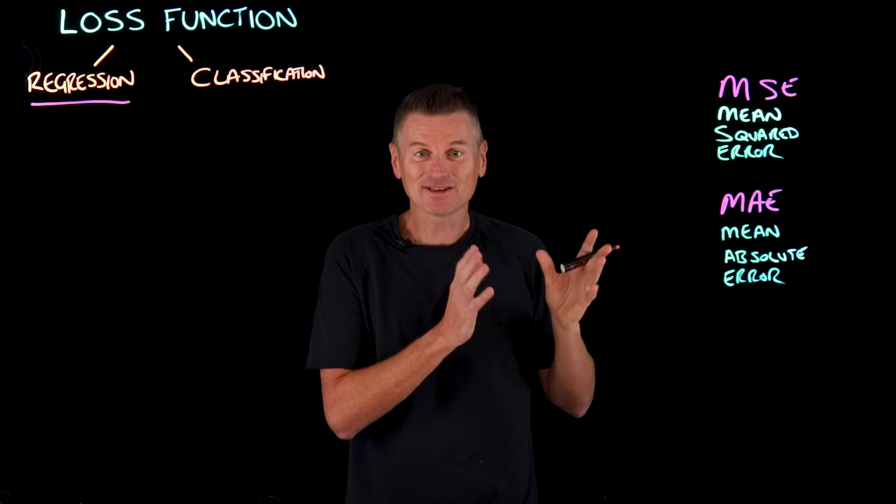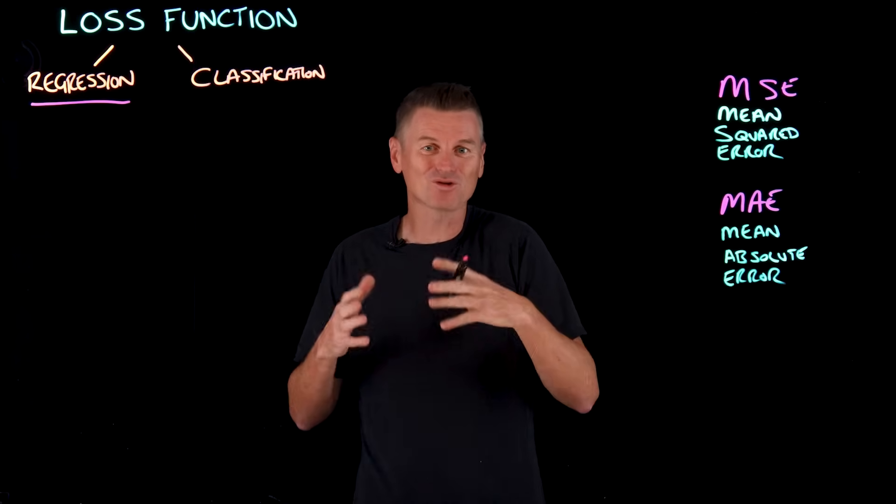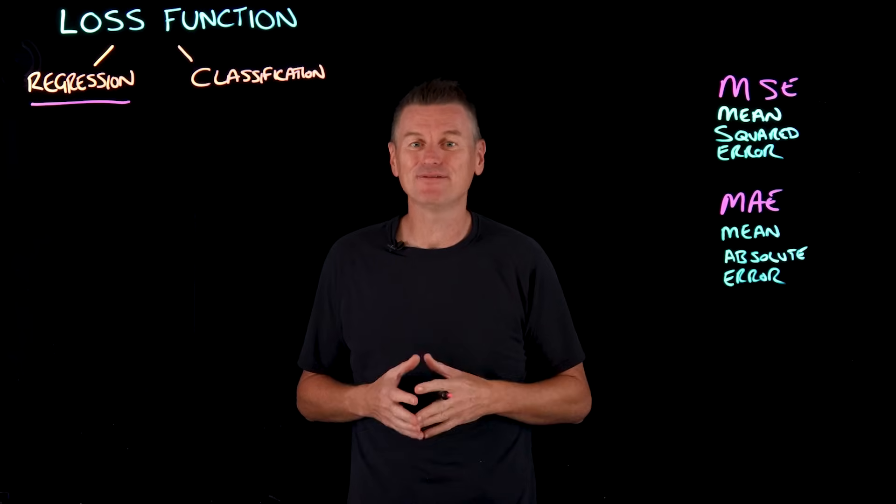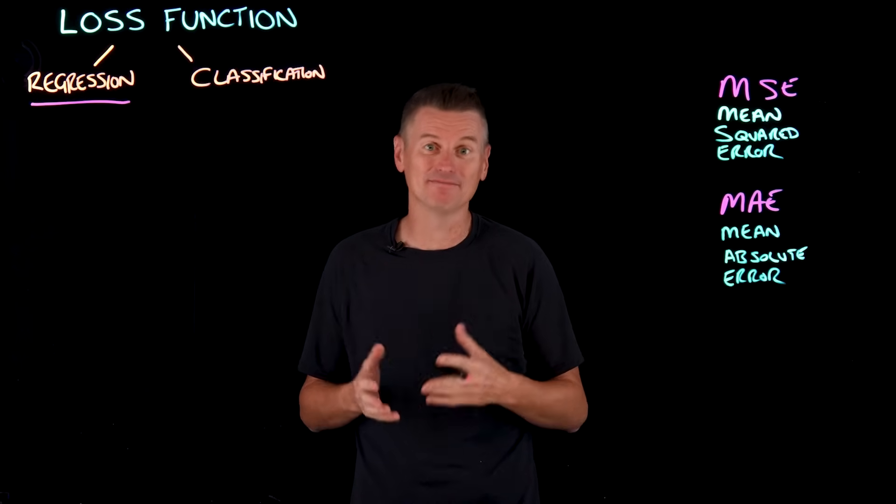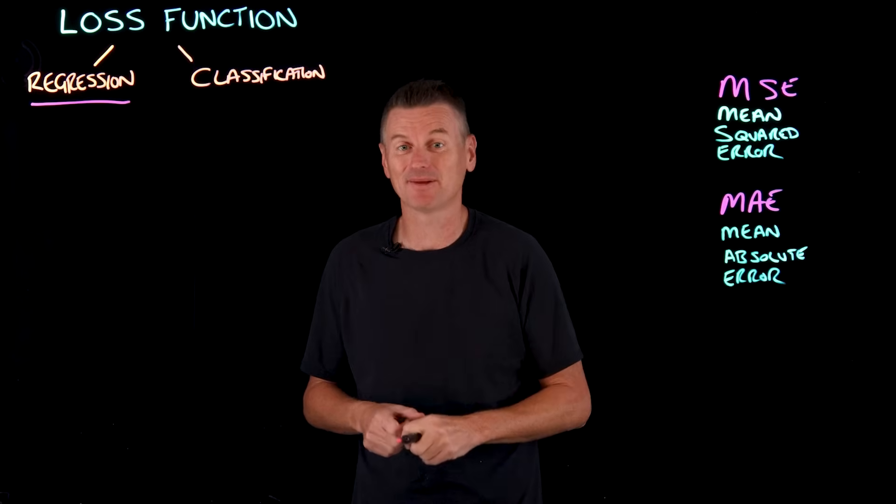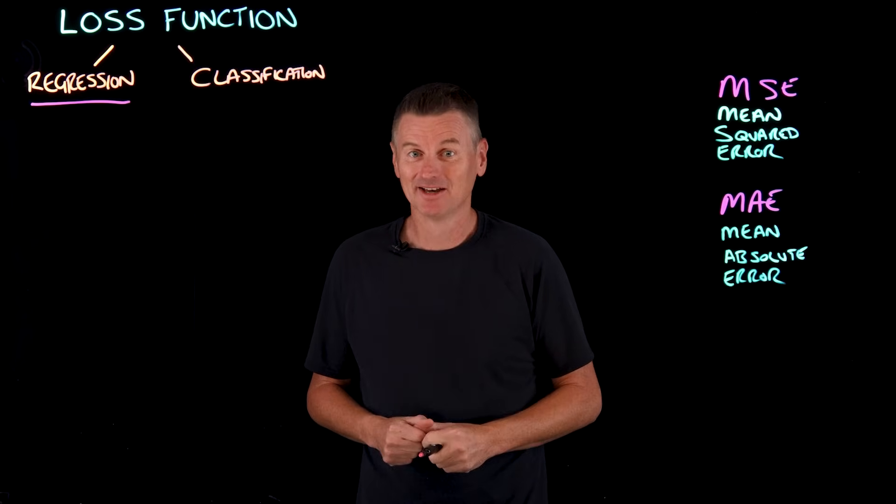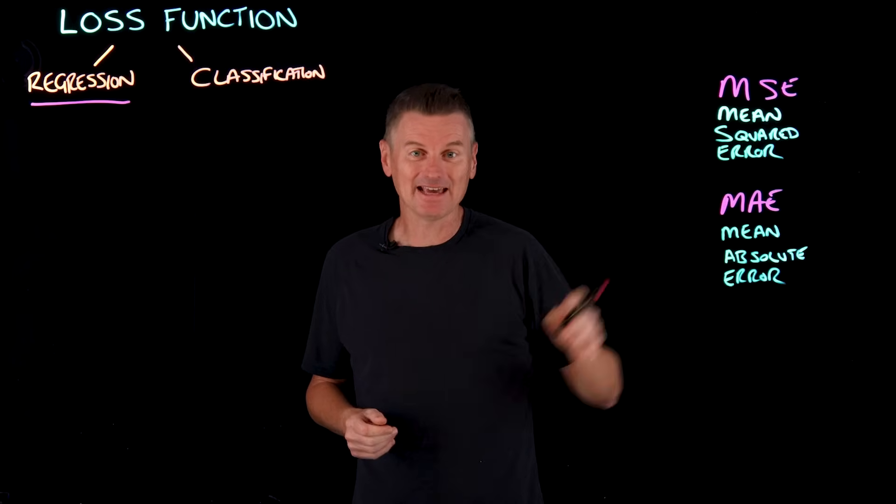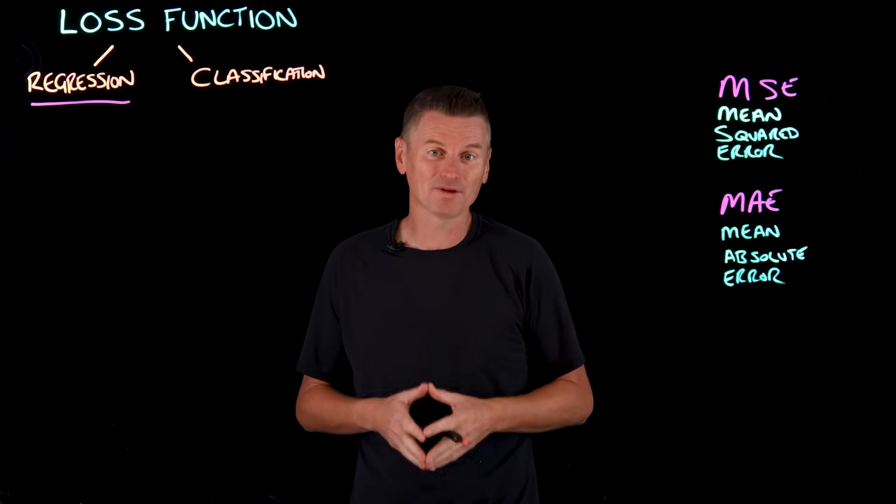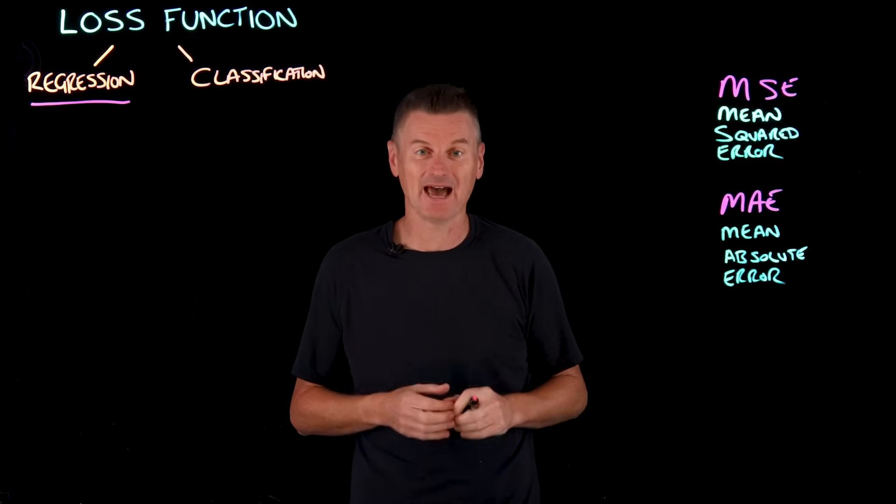So how do you decide which regression loss function to pick? If your ground truth data has relatively few extreme outliers with minimal deviation, like the temperature ranges in the month of July in the southern US, which is basically always hot, then MSE is a particularly useful option, as you want to heavily penalize predictions that are far off from the actual values.